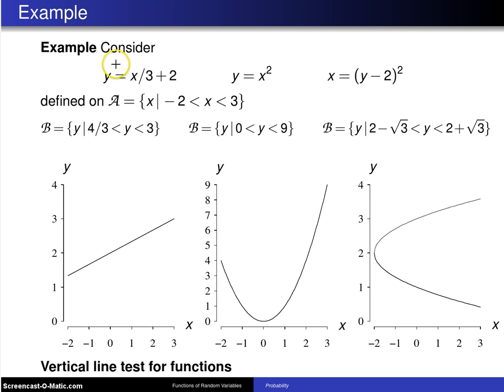The first of these three is a line, and in fact, it's a line with slope 1 third and intercept 2, and there is the graph of the line. y equals x squared is a parabola. It looks like this. And the third one, x equals y minus 2 squared, is a parabola on its side.